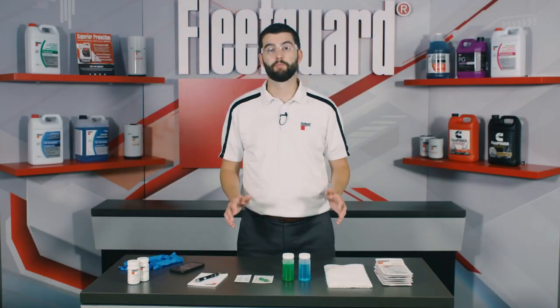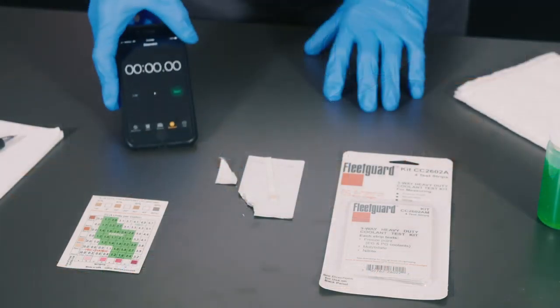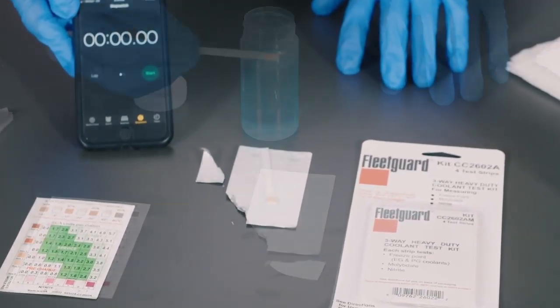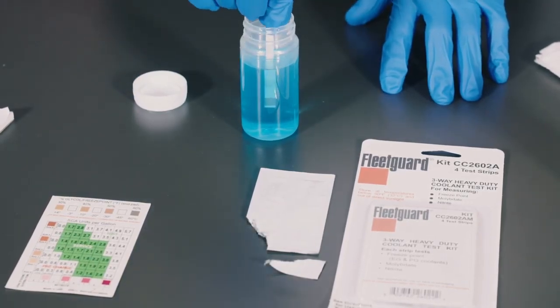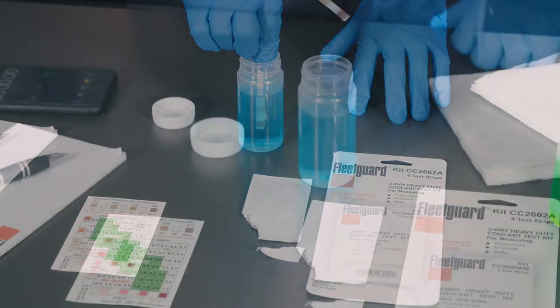Next, make sure you have a smartphone timer or stopwatch close by and ready to start immediately after the testing begins. To begin the test, take one test strip and submerge the end with the three chemical pads into the coolant for three seconds.